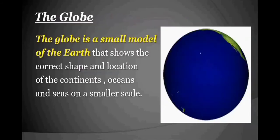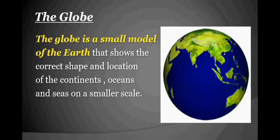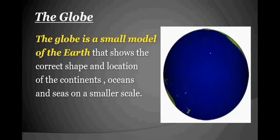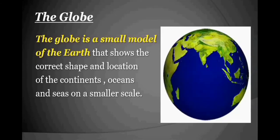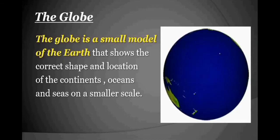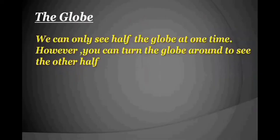So let's see what is a globe. Globe is a small model of earth that shows the correct shape and location of the continents, oceans and seas on a smaller scale.